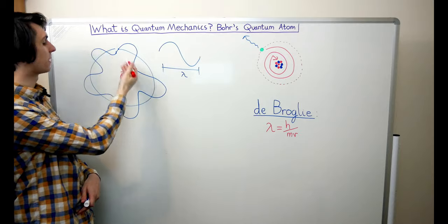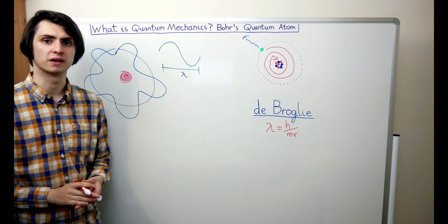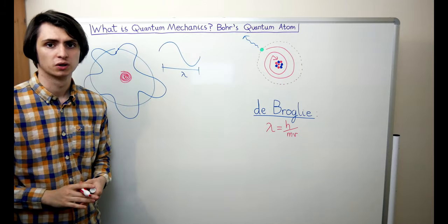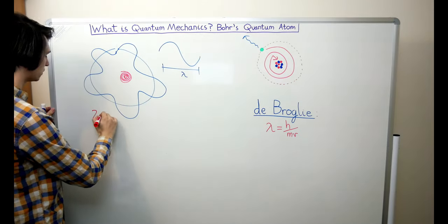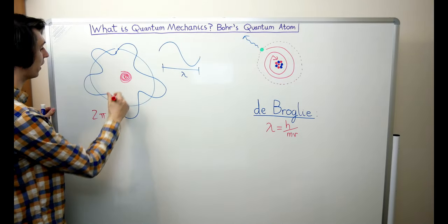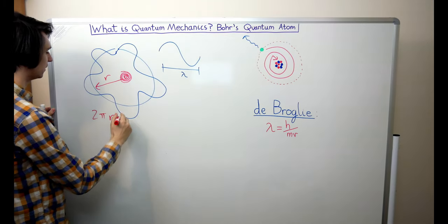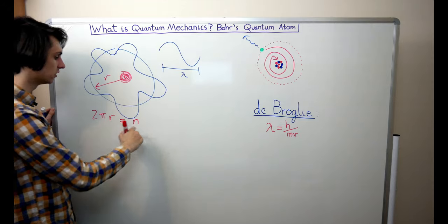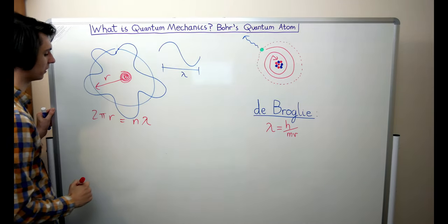So because these endpoints need to match up, we get a relation between the circumference of the orbit and the wavelength of the electron. We must have that 2 times pi times r, where r is the orbital radius, must be equal to some integer, some positive integer n times the wavelength of the electron lambda.